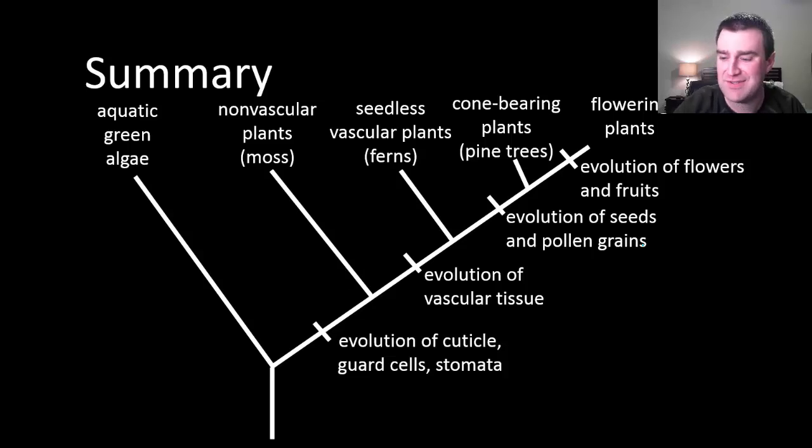All right, so we kind of talked about most of plant history, the transition out of water and onto land. And then we found additional adaptations that helped plants live further and further on land. And finally, adaptations that helped spread them really far so that they could colonize all over the place very easily.